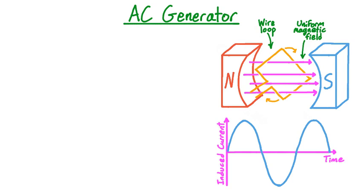Now recall that in a particular circuit, current can have one of two possible directions, so we can represent a current with a positive or negative number, where the size of the number corresponds to the strength of the current, and the sign — positive or negative — corresponds to its direction. If we draw a graph of the current induced in our generator with respect to time, we get a graph that shows the current periodically switching between a most positive and a most negative value, and back again. The switch between these directions happens any time the current passes through zero, since the current has a different sign just before and just after these times.